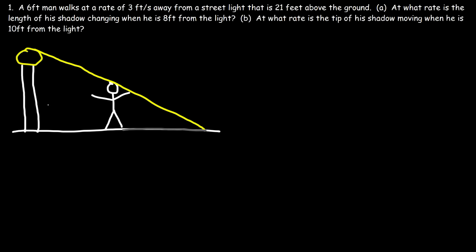And so this is going to be the shadow that's formed behind the person from the light. Now we said the streetlight is 21 feet tall, and the man, he's 6 feet tall. And let's say the distance between the man and the light is X. And S will represent the length of the shadow. And L will be the sum of X and S.